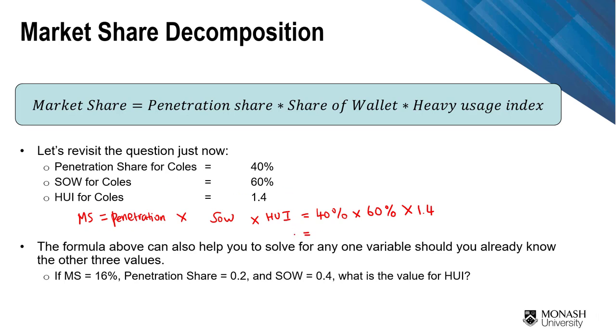So that gives you a market share of 33.6%. Now, this formula can also solve for any one variable if you already know the other three values.